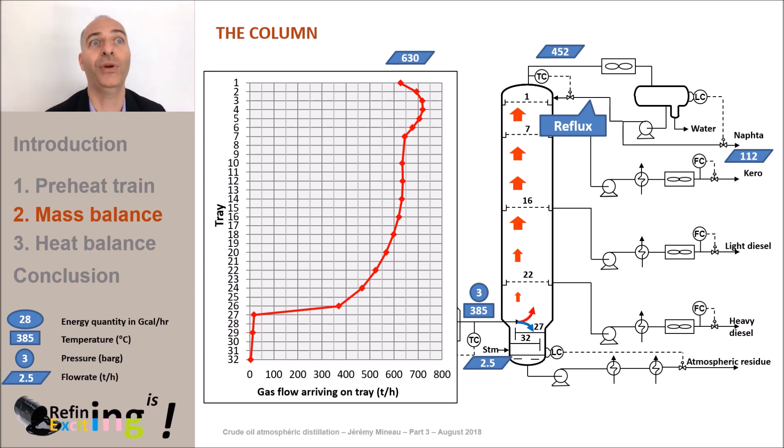This naphtha will generally be debutanized before being routed to a storage tank. To debutanize, it simply means that we will remove light compounds from C1 to C4 that would lead to a product with too high volatility to be stored. Note that the flow rate of naphtha withdrawn is generally not chosen directly. It is indeed preferred to control the overhead temperature of the column, which will set indirectly the flow of naphtha and thus its cut point. In our case, to extract 112 tons per hour or to aim for a cut point of 150 degrees C, since it's the same thing, it will be necessary to specify in the control system a value of 144 degrees C as an overhead temperature. This value is obtained by calculation using a process simulator.